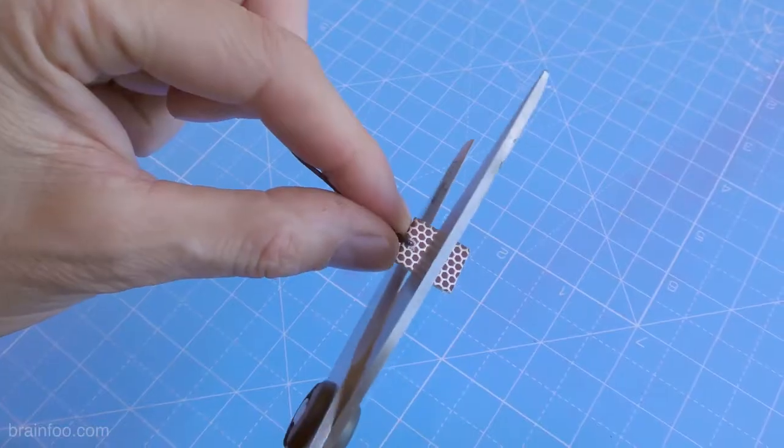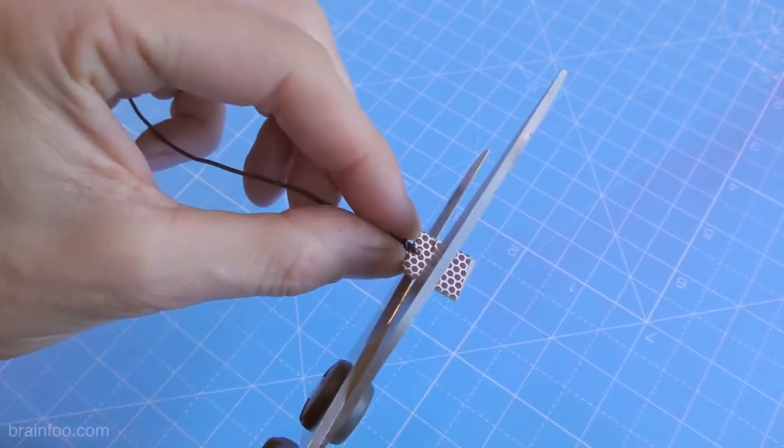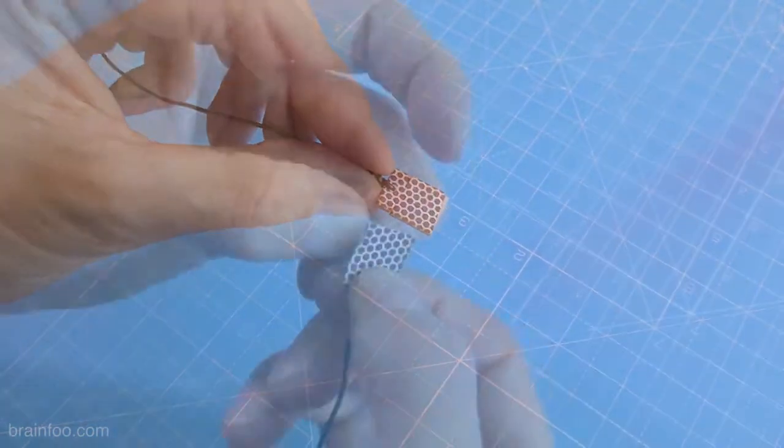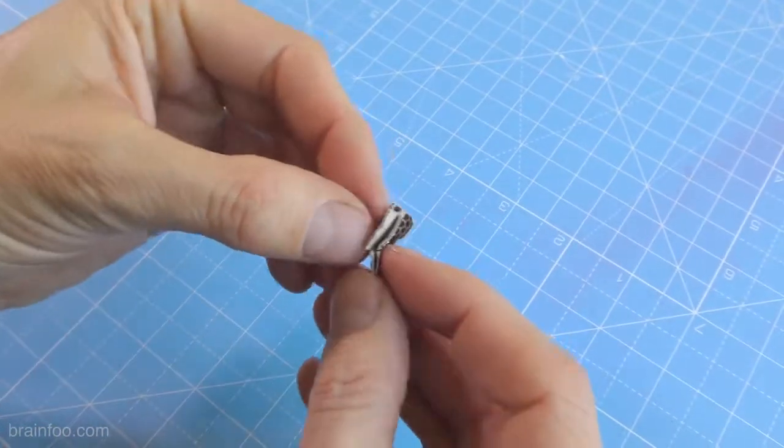For trip wires you can use the exact same method for the pull start igniter. But to increase reliability further if you make a small cut just here it allows you to fold the striker into an X shape.